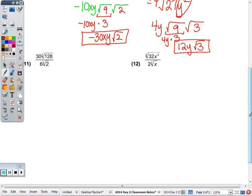To finish with 11 and 12, back to our cubes. 30 divided by 6 is 5. Cube root of 128 divided by 2 is 64. 64 is a perfect cube. So cube root of 64 is 4 times the 5. We get a final answer of 20.